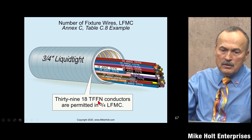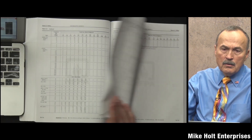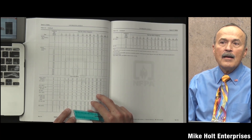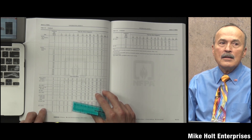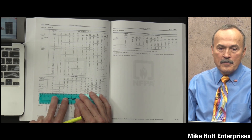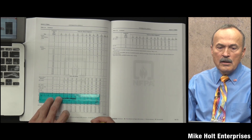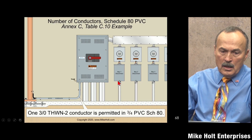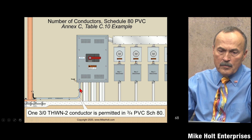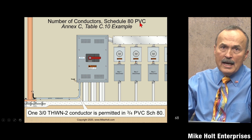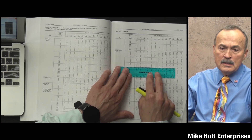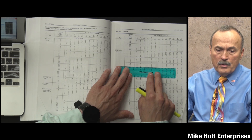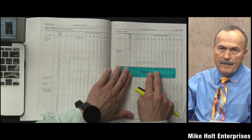Now fixture wires using Table C.8 for liquid tight: with 39 #18 TFFN conductors in 3/4-inch liquid tight, going to Table C.8 under TFFN 18 gauge - the answer is 39, so the graphic is correct. For a single conductor in a raceway, going to Annex C for PVC Schedule 80 - that's Table C.10 - a single #3 AWG conductor can fit in a 3/4-inch raceway.